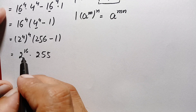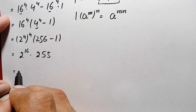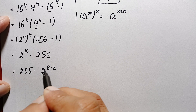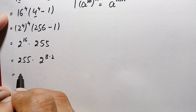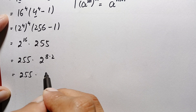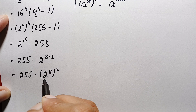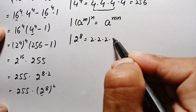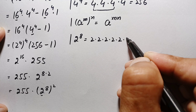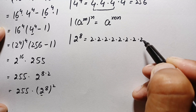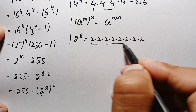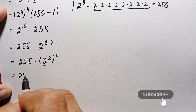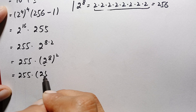Now we multiply this to get 255 times 2 raised to power 16. We can write 2 raised to power 16 as 2 raised to power 8, all squared. We find 2 raised to power 8 by repeated multiplication: 2, 4, 8, 16, 32, 64, 128, 256 — so 2 raised to power 8 equals 256. Therefore the expression becomes 255 times 256 squared.